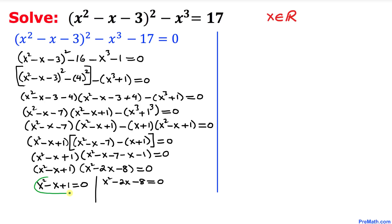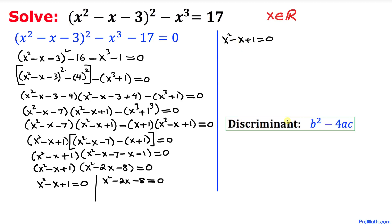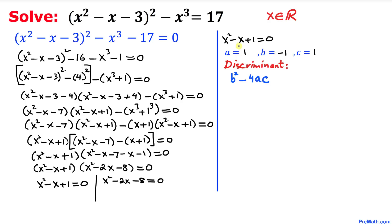Let's focus on this first equation — it is a quadratic equation. Let's check whether it has any real solutions by finding the discriminant. Always remember the discriminant equals b squared minus 4ac. In our case, a is 1, b is negative 1, and c is 1.